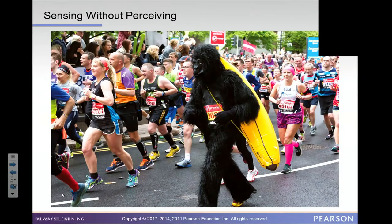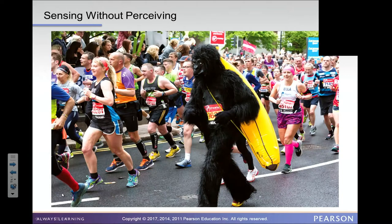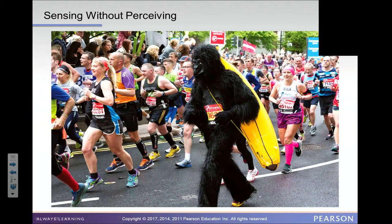In that same vein of sensing without perceiving, there's an obvious person in a gorilla suit in this race image. The point is one can be paying so much attention to the race — say you're a parent focusing on your daughter with the red headband — that you are not aware of the person in the gorilla suit as part of the race. If you're on the other side focused in on her, you could be inattentionally blind to the gorilla.